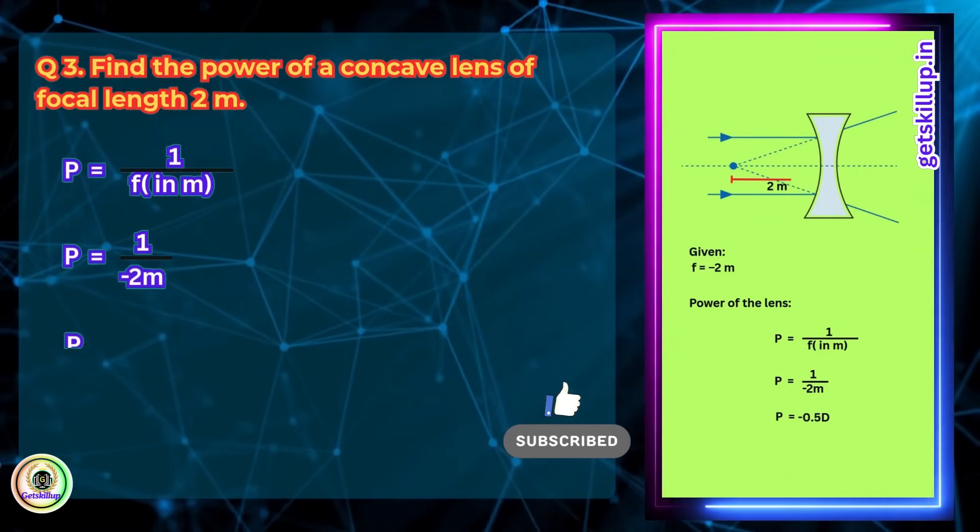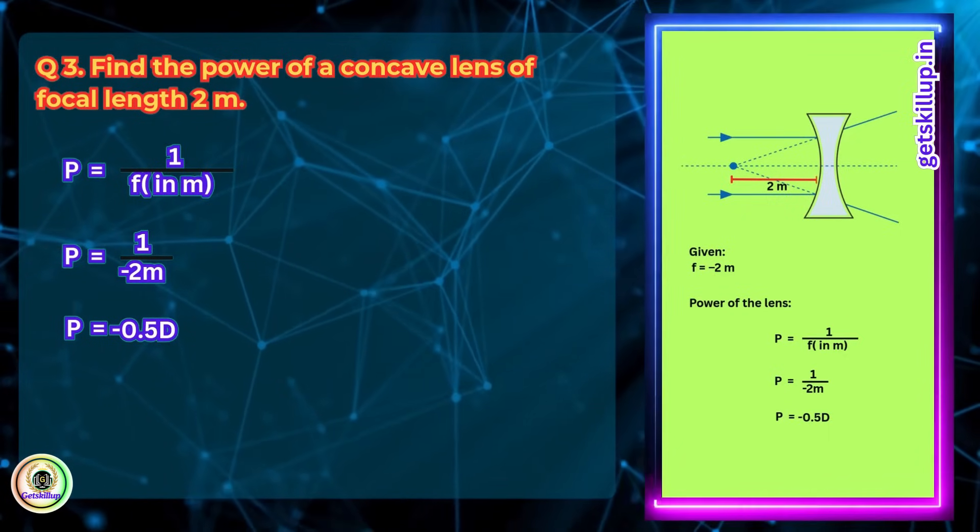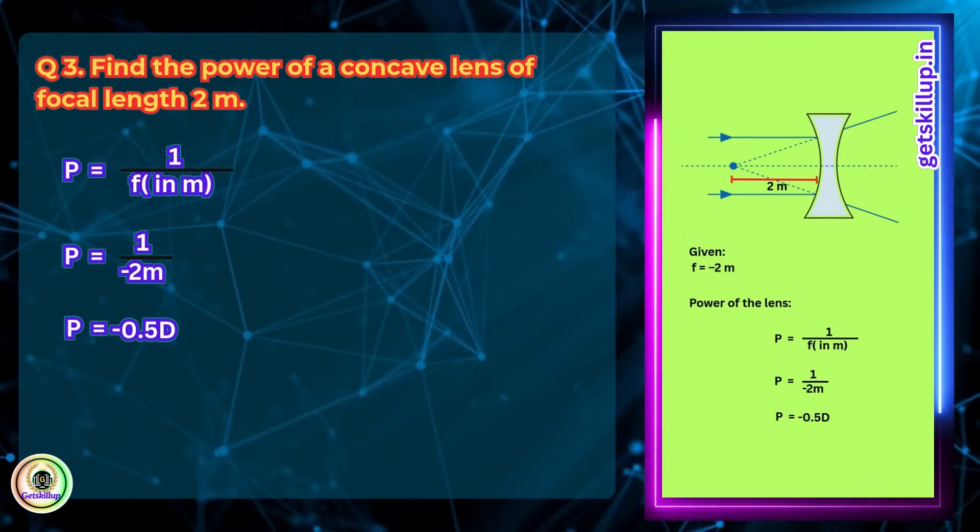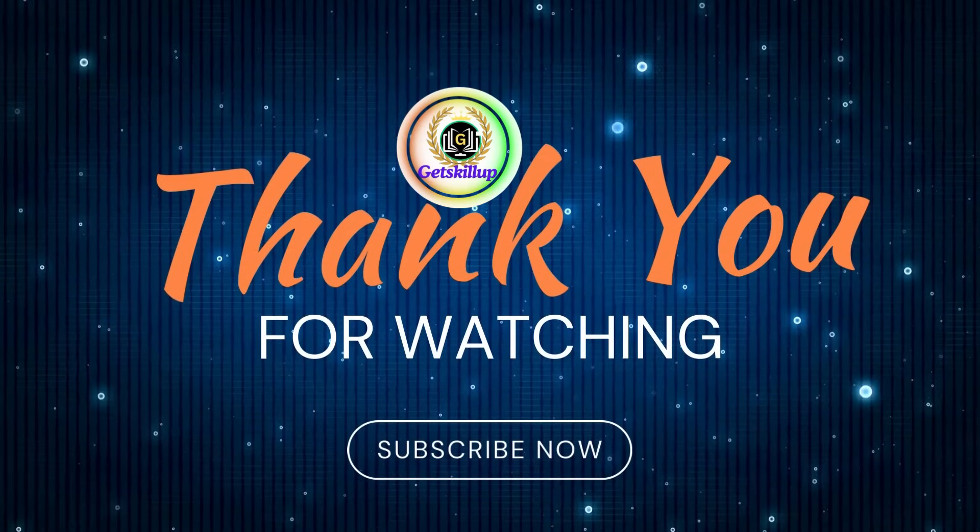1/(-2 m) = -0.5 D. Power of the concave lens is -0.5 diopter. Thanks for watching, subscribe to support more content like this.